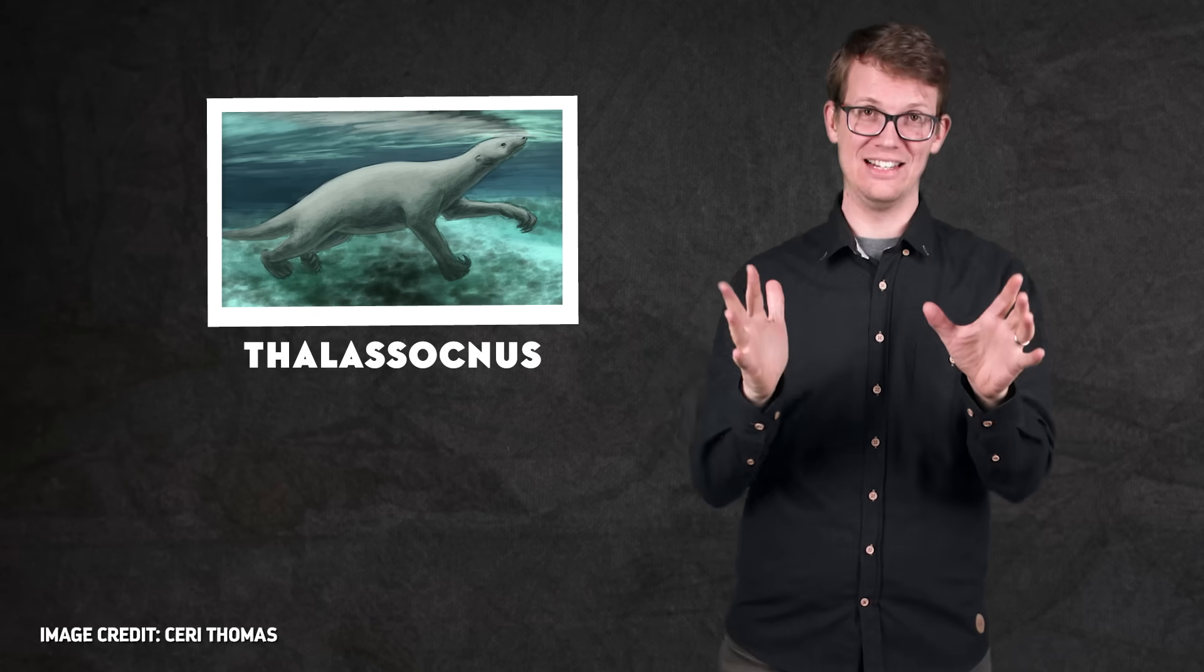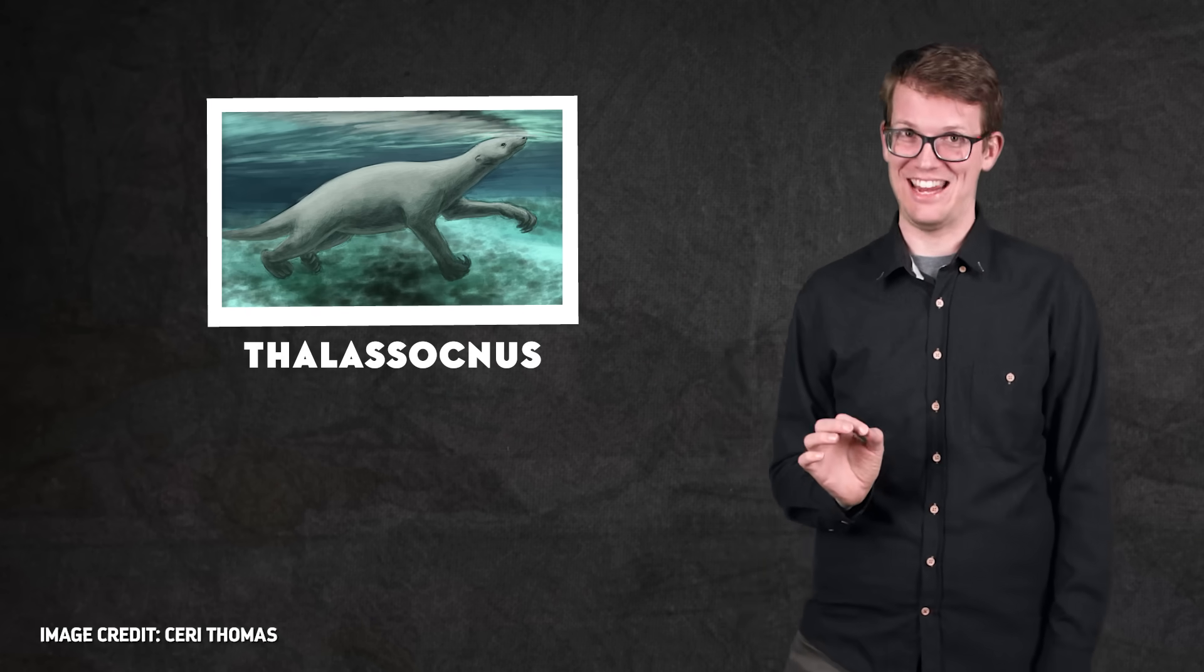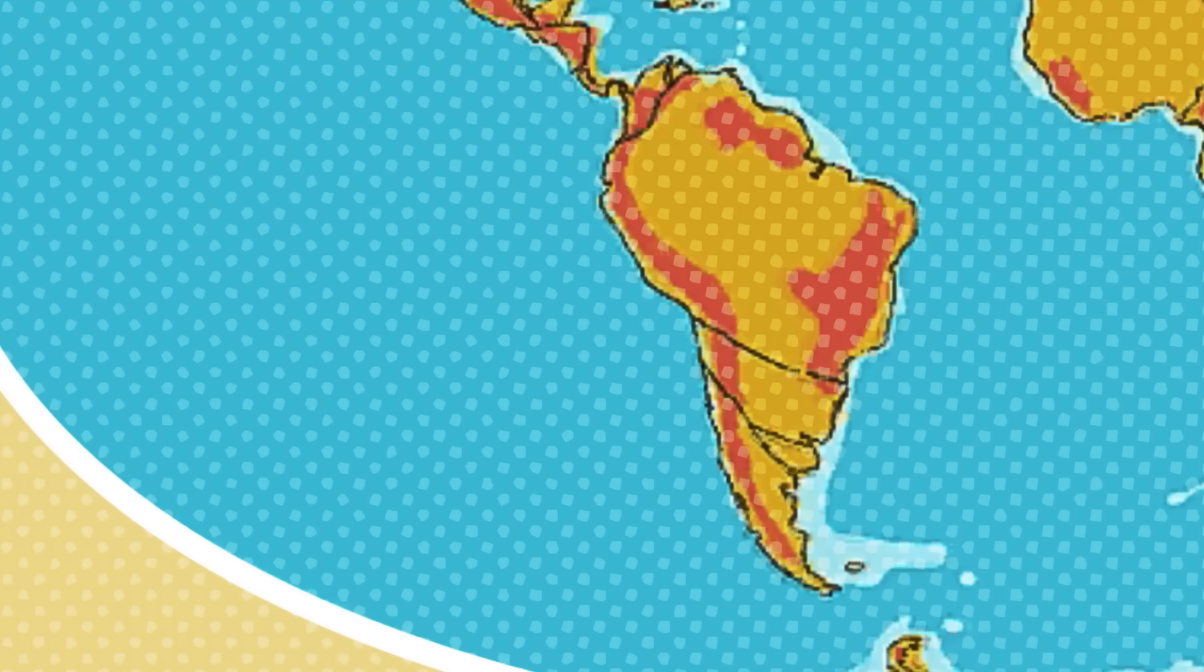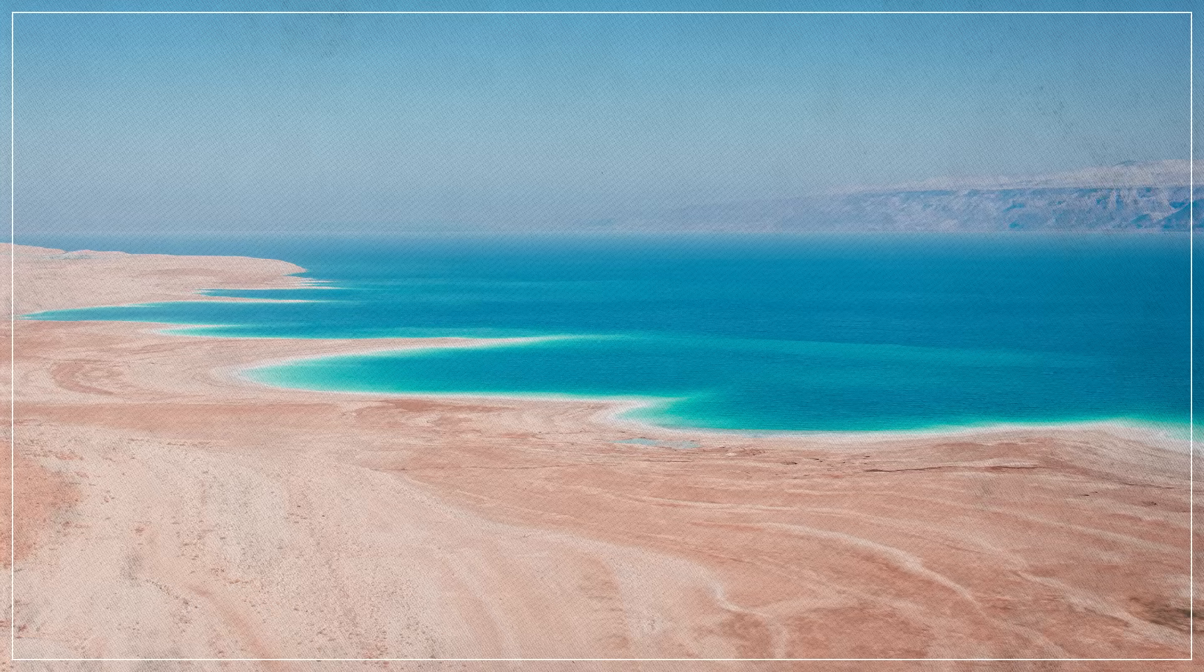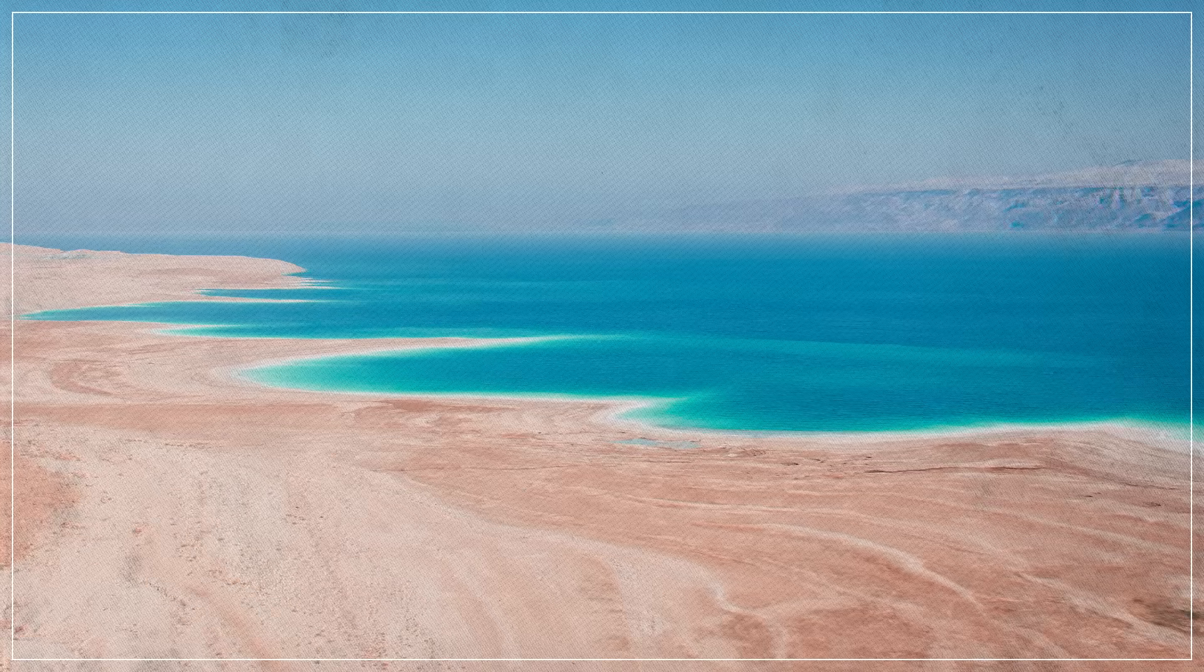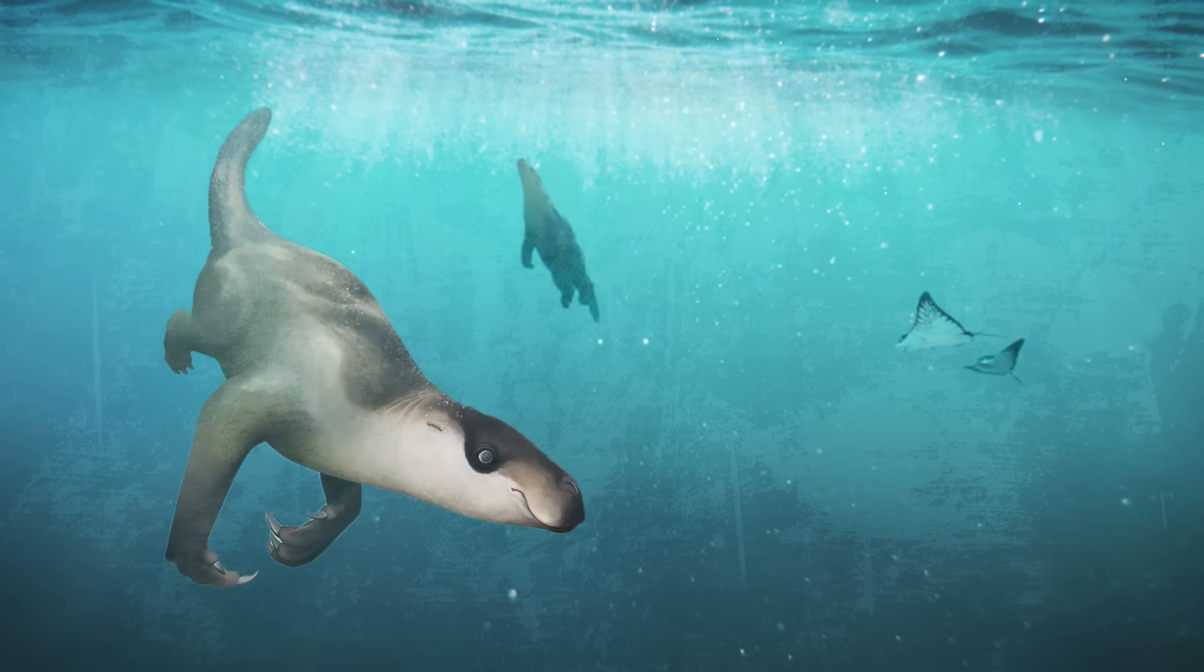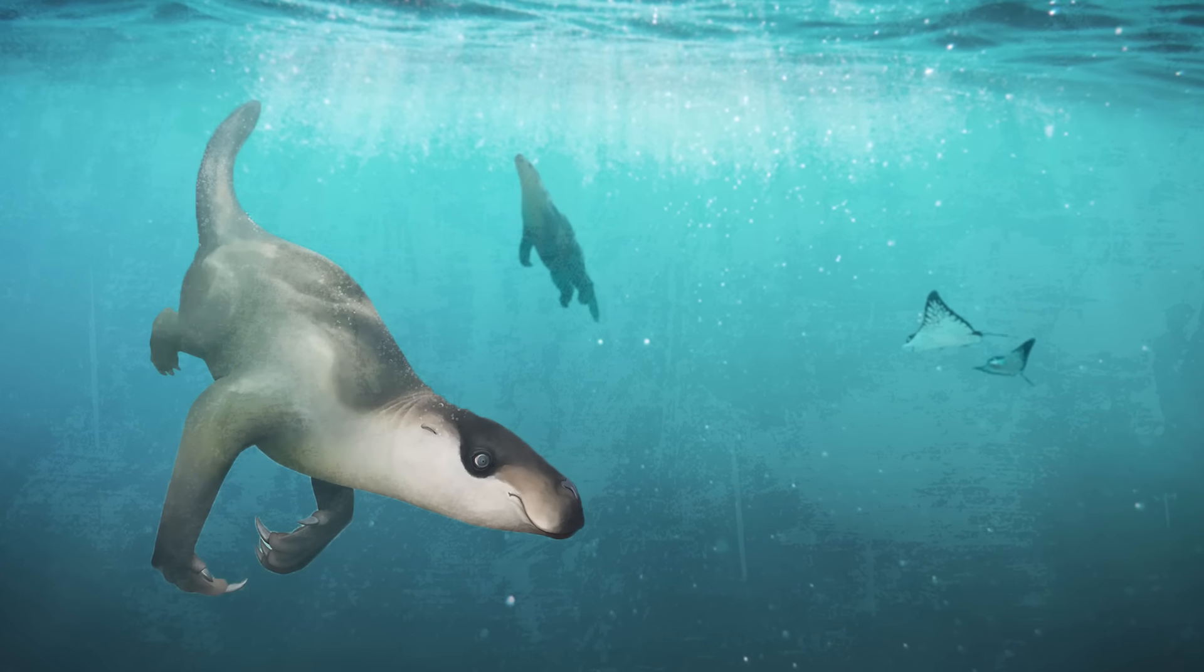And that knack for picking out resources that nobody else wanted resulted in some pretty strange sloths. Take the sea sloth, Thalassocnus, which was very hard to say. Eight million years ago, in the late Miocene Epoch, the Peruvian coast was a hot, dry desert without much food for a large herbivore. So to make ends meet, an early species of Thalassocnus turned to the sea and the grasses that grew in the shallow water.